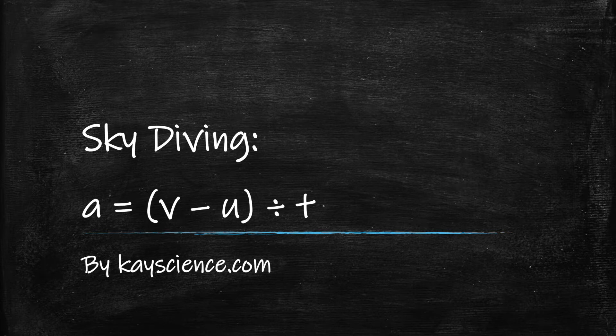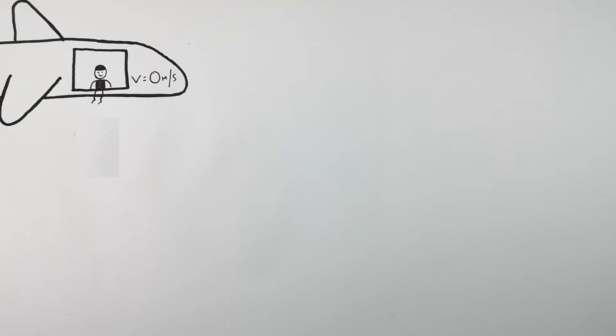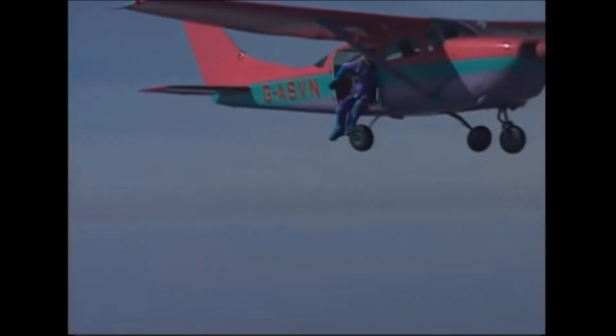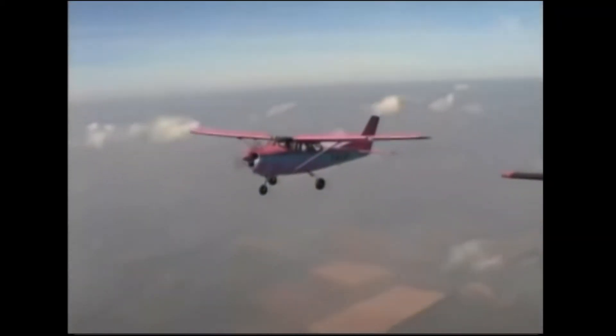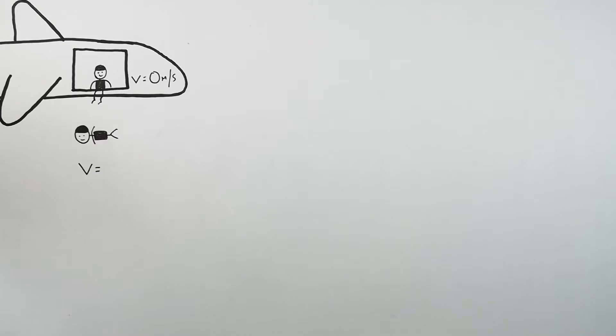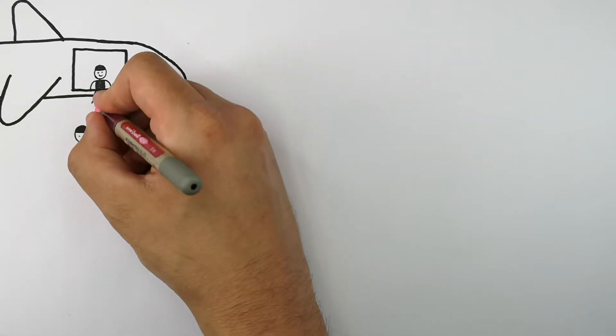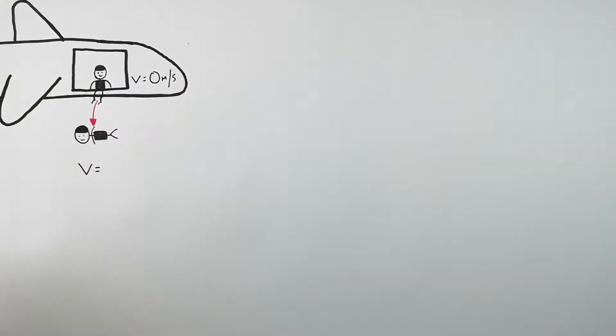Skydiving acceleration calculations by kscience.com. This person is currently sitting on the plane waiting to jump out of it. Because they are stationary on the moving plane, their acceleration is currently zero meters per second squared. So when they jump out of the plane, their initial velocity is zero meters per second.